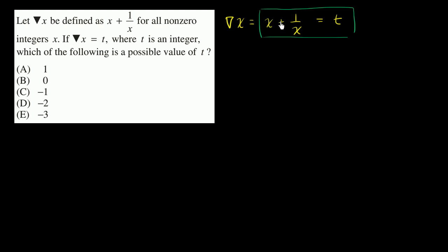So if we take this and multiply both sides by x, we're going to get x times x is x squared, one over x times x is one, and then t times x is tx.